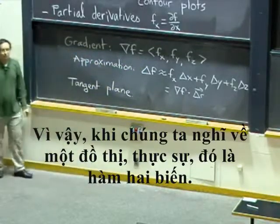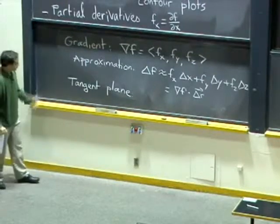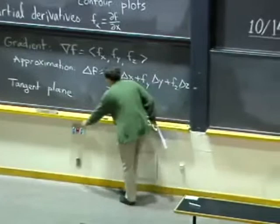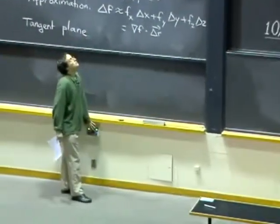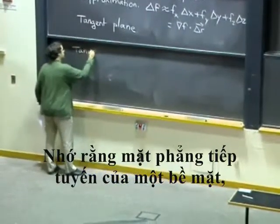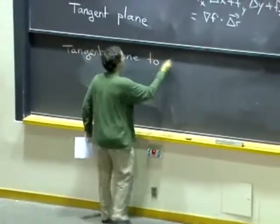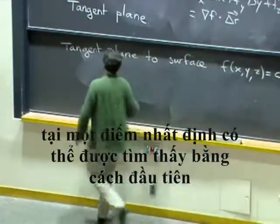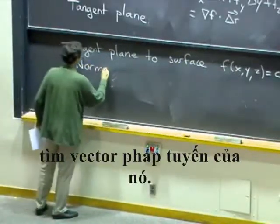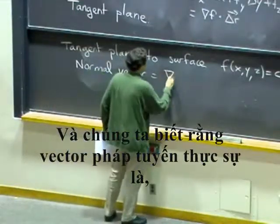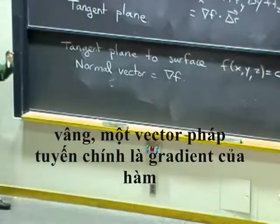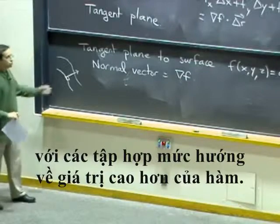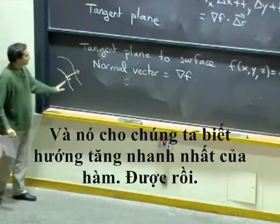When we think of the graph, that's really with a function of two variables. That also tells us how to find tangent planes to level surfaces. Recall that the tangent plane to a surface given by the equation f of x, y, z equals c at a given point can be found by looking first for its normal vector. The normal vector is given by the gradient of a function, because the gradient is pointing perpendicularly to the level sets towards higher values — it gives us the direction of fastest increase of a function.